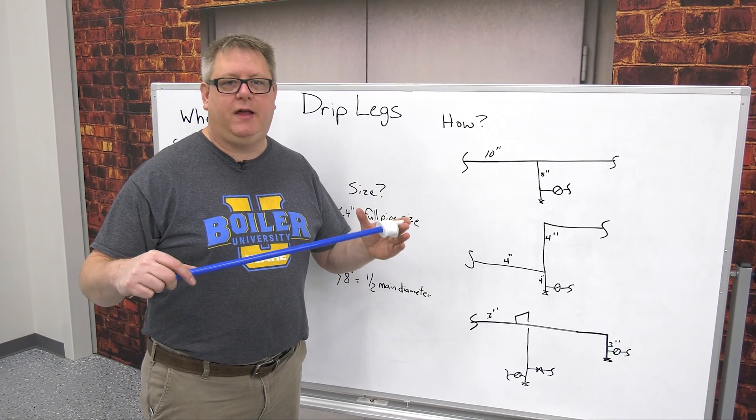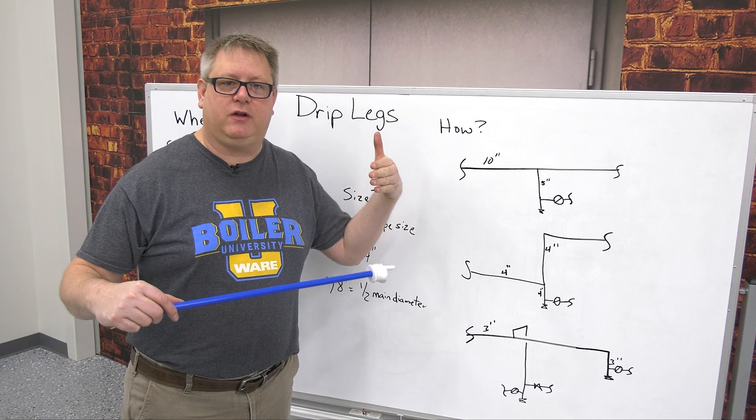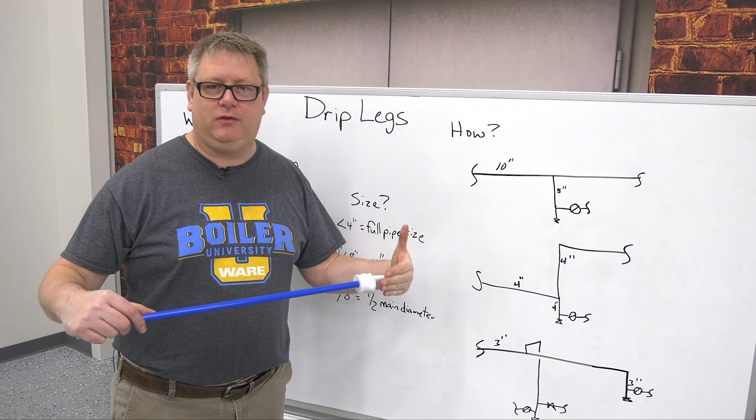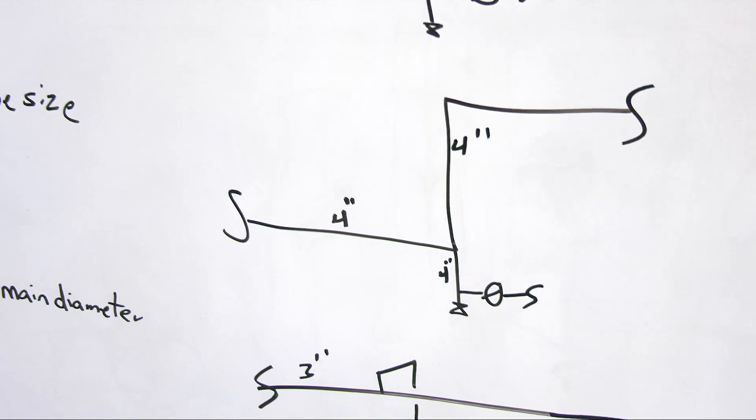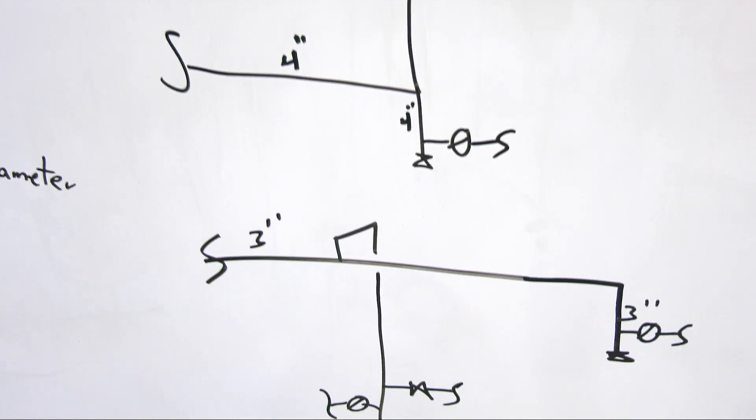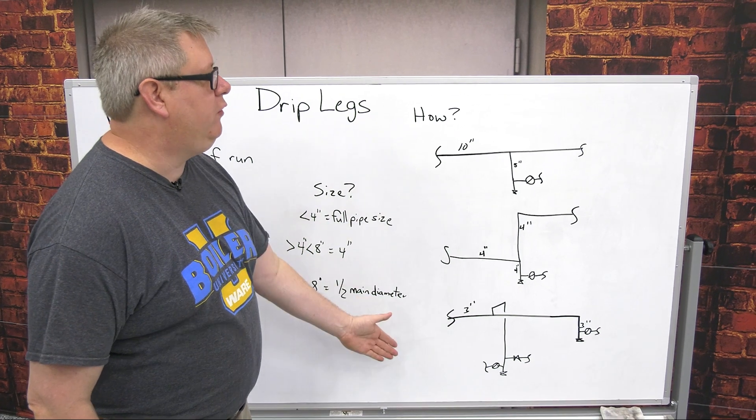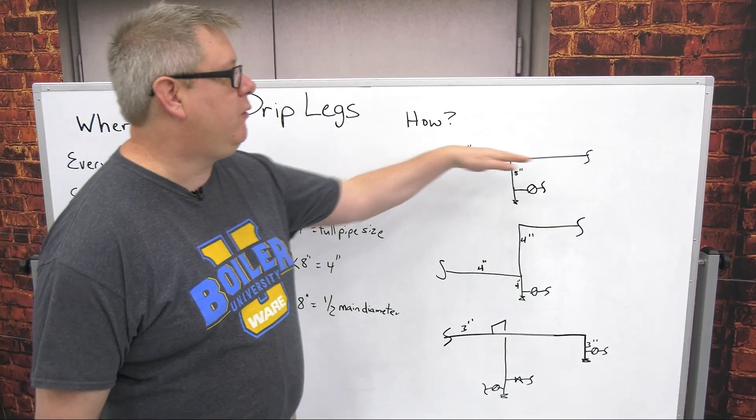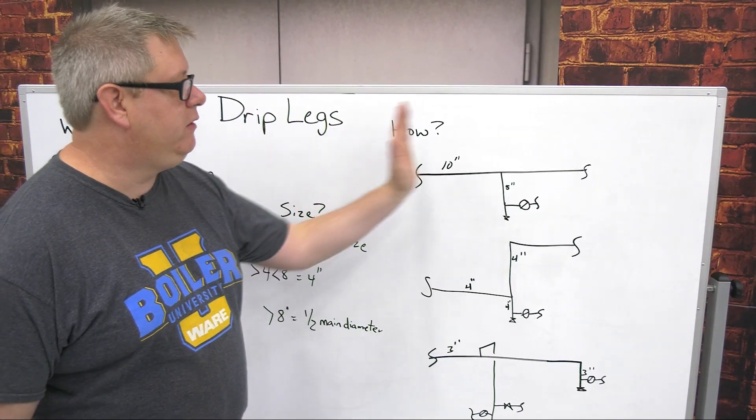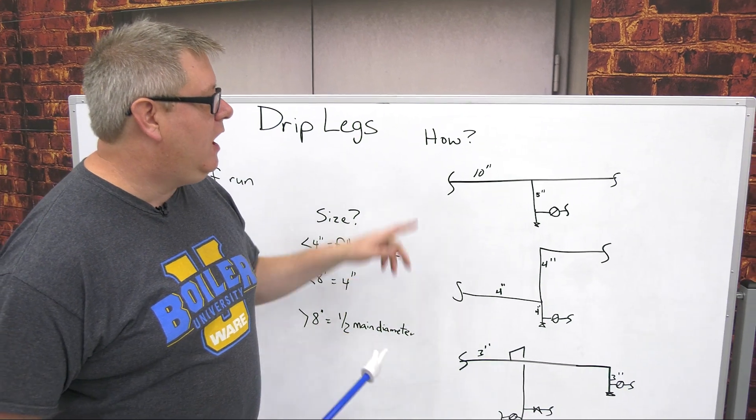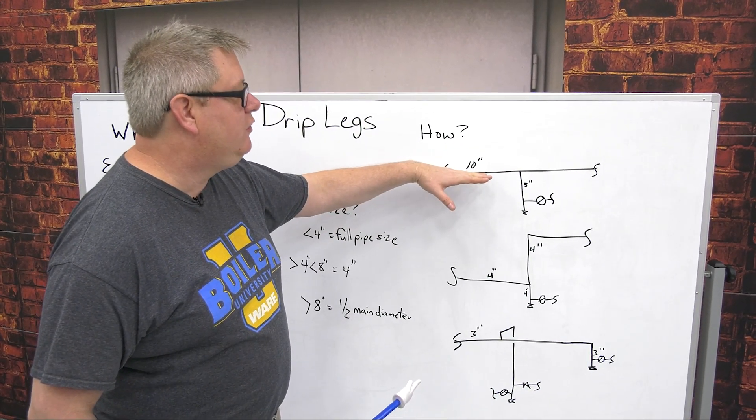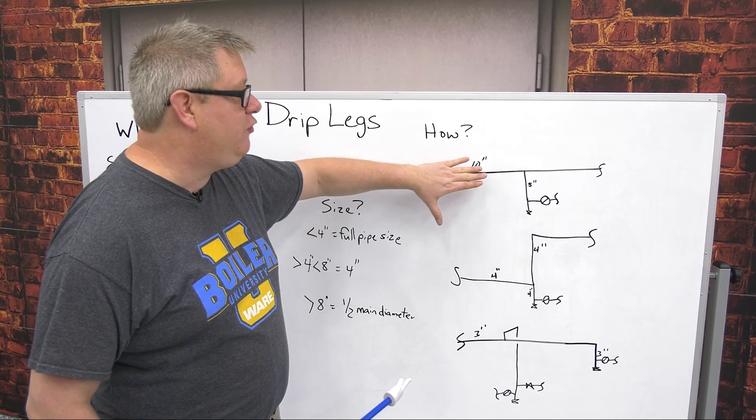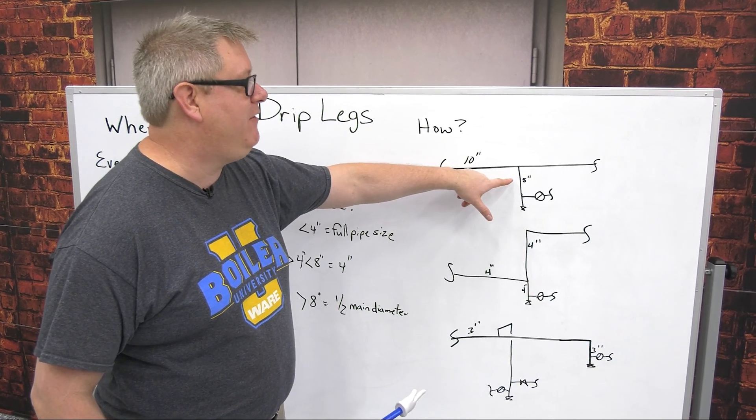We've looked at some drip legs. We've talked about specifically where drip legs need to be in the system, and today we're going to look at how those drip legs are going to look for different applications in the system. So how are we going to install the drip legs? If I've got a horizontal run, one of those 200 foot interval portions, I'm going to look at my main line size. In this case it's 10 inch.